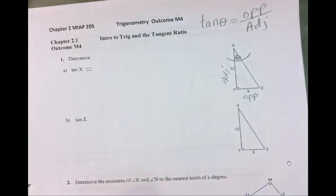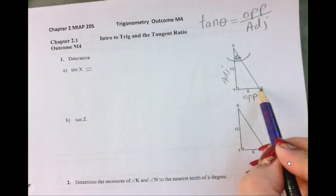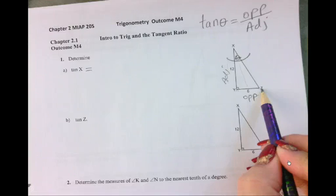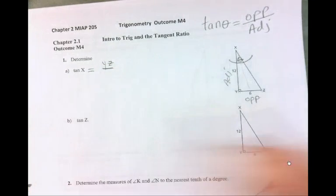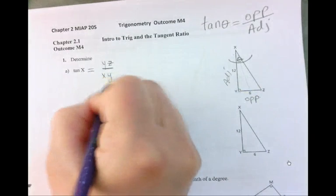Now, I want to write out in terms of the letters in the line, in kind of the line segment notation. What is this side going to be called? YZ. Over. And what is this going to be called? XY.